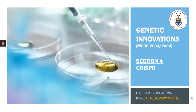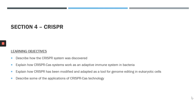Hi students, and welcome to your first lecture on CRISPR in section 4. In this section, we will first describe how the CRISPR system was discovered, then explain how CRISPR-Cas systems work as an adaptive immune system in bacteria. Next, we will explain how CRISPR has been modified and adapted as a tool for genome editing in eukaryotic cells, and then finally describe some of the applications of CRISPR-Cas technology.